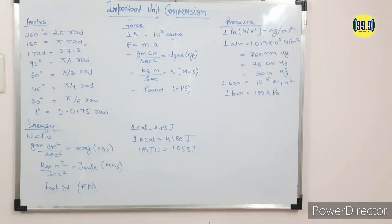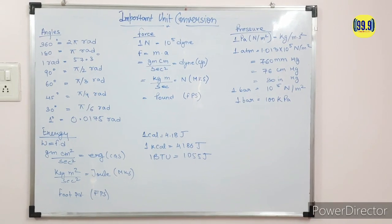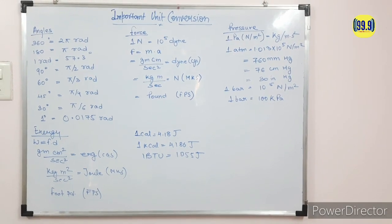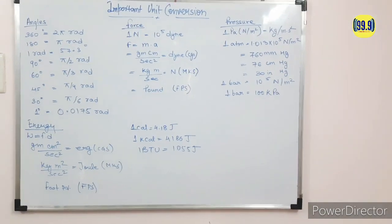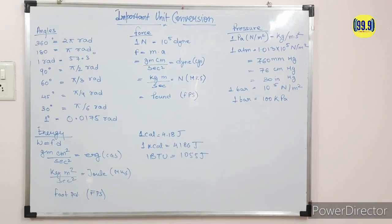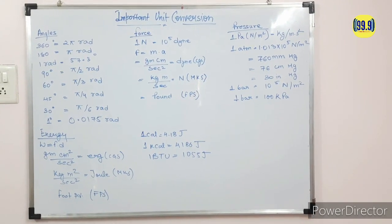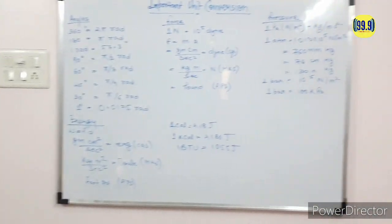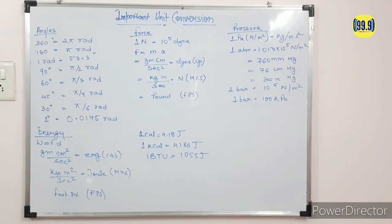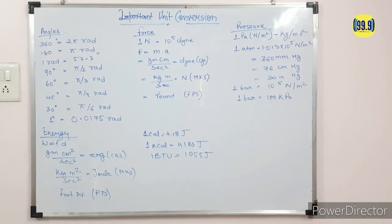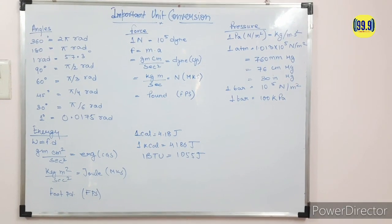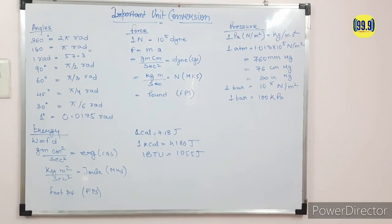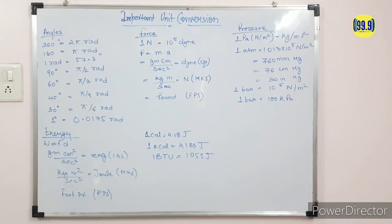Now come to the pressure unit. 1 Pascal is equal to 1 Newton per meter square or kg per meter·second square. The pressure unit conversions are: 1 atm is equal to 1.013 × 10⁵ Newton per meter square, equal to 760 mm Hg, equal to 76 centimeter Hg, and also equal to 30 inches of Hg. 1 bar is equal to 10⁵ Newton per meter square, or equivalently 100 kilopascal.